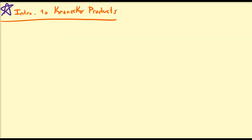In this video we're going to introduce an operation between matrices known as the Kronecker product. The Kronecker product between two matrices A, which is m by n, and another matrix B, which is p by q, will be denoted by an x with a circle around it. We're going to define it, give a couple examples, and one basic property. We won't get into the applications here — we'll leave that for another day — but this introduction will show you how to calculate one.